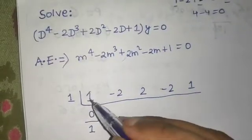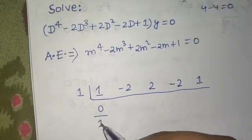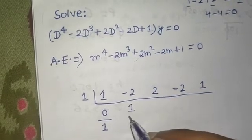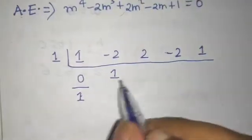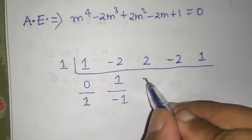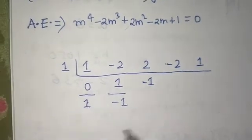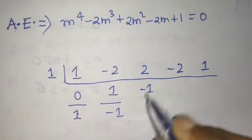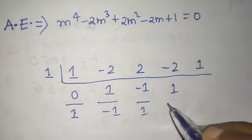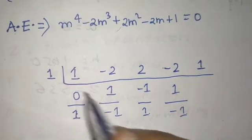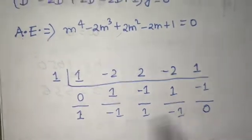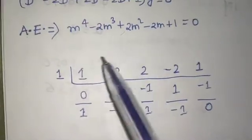Multiply one by one to get one, write below minus two, add to get minus one. Multiply by one to get minus one, write below two, add to get one. Multiply by one to get one, write below minus two, add to get minus one. Multiply to get minus one — finally you get zero, confirming that one is a root.